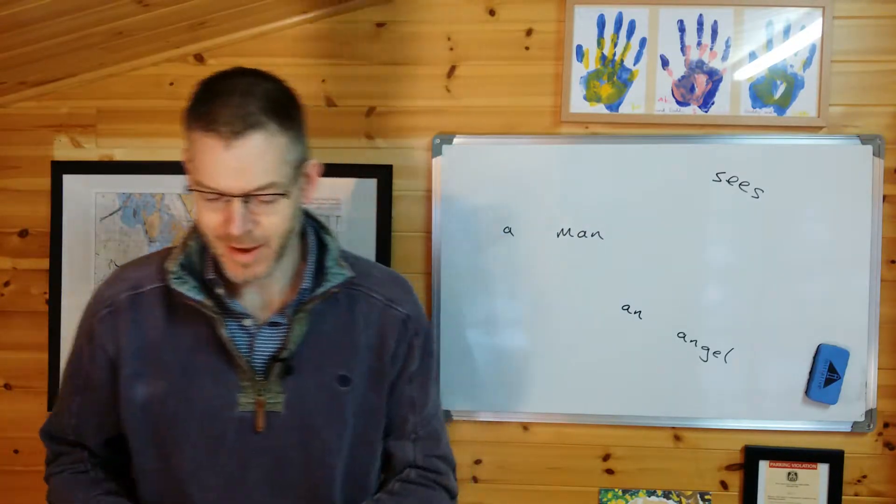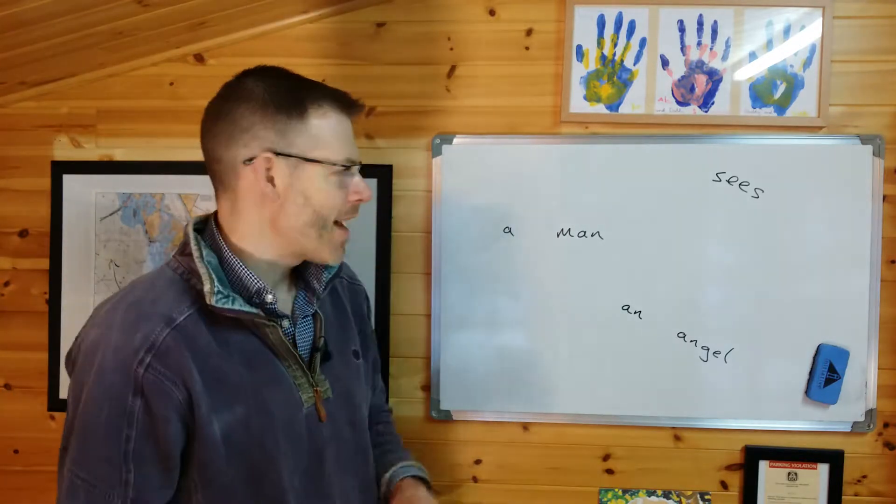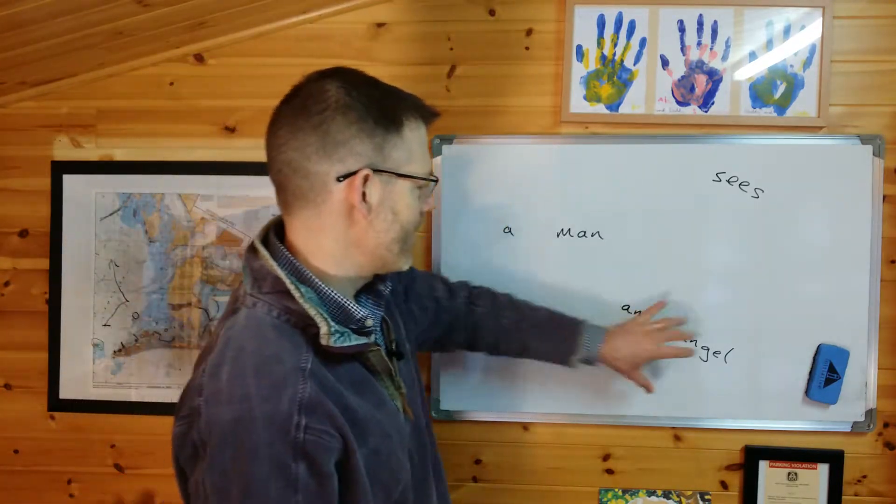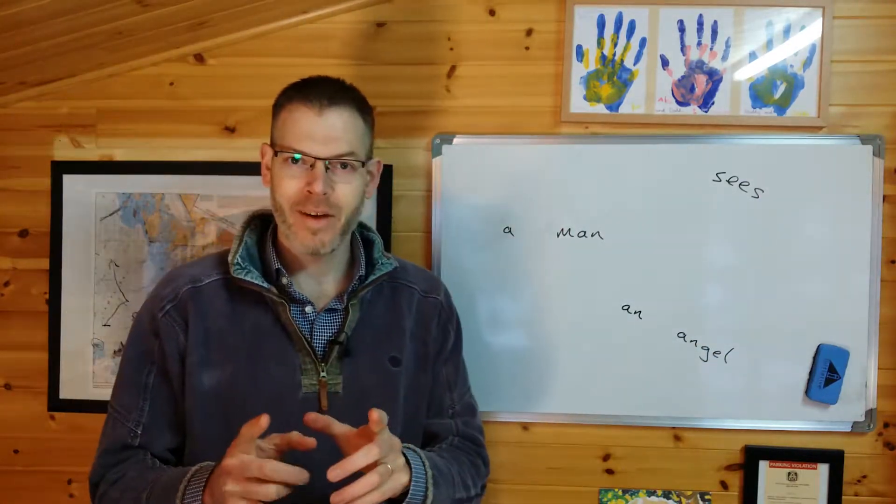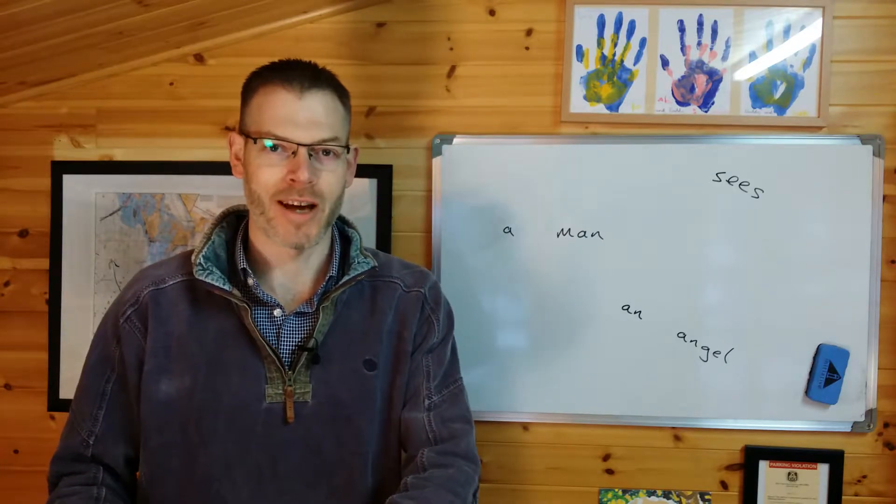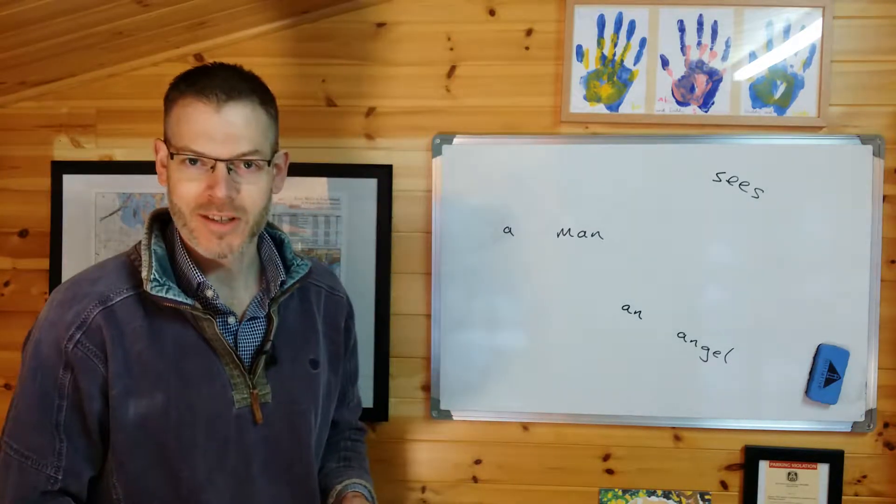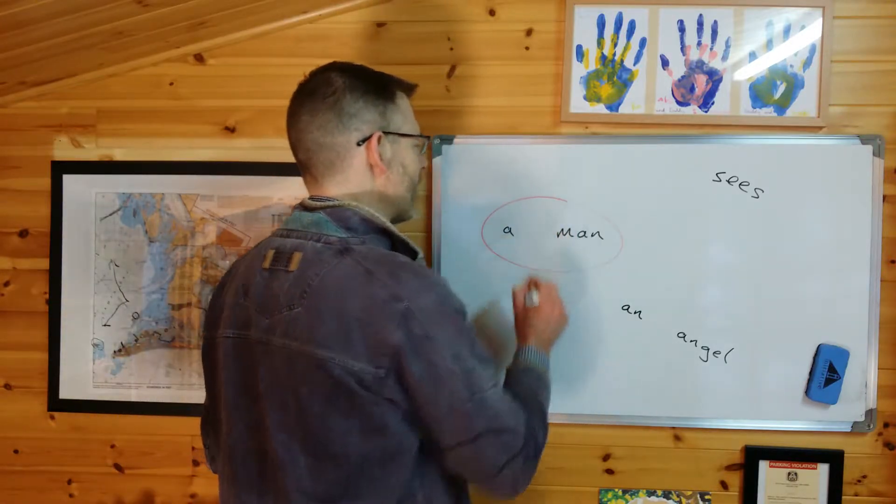Now, if I just had these words scattered around the page and I could jumble them up in any order I wanted, so a man, an angel, and sees, instead of organizing my language so that it was word order that told me what was the subject and what was the object, I could do it another way. I could just say, well, look,